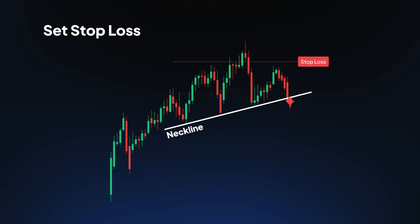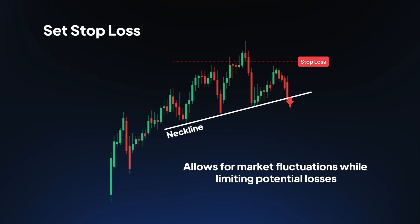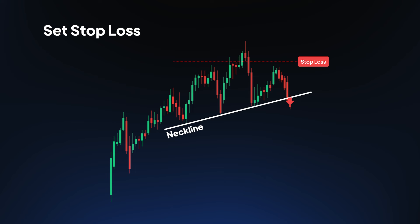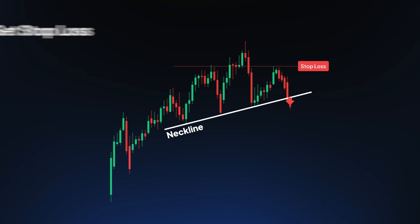Set stop loss: place your stop loss above the right shoulder or head, depending on your risk tolerance. One common method is to set the stop loss order just above the right shoulder — this allows for market fluctuations while limiting potential losses. Another tactic is to place the stop loss above the neckline, ideally at the peak of the right shoulder, which provides the pattern with additional room to fully develop.